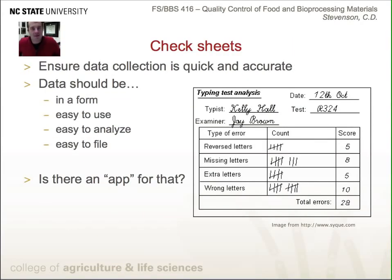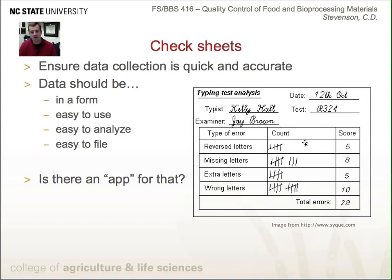Next we'll cover the easiest concept in this lesson: check sheets. These are simply used to ensure that data collection is quick and accurate. The data should be in a form — for example, a typist named Kelly Hall examined by Jay Brown, with categories for types of errors: reverse letters, missing letters, extra letters, or wrong letters. We record the date, test number, and simply count the number of times each problem occurred, then sum them to a total number of defects.